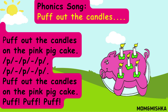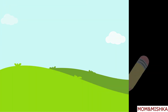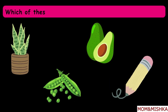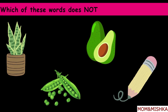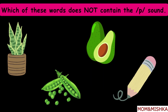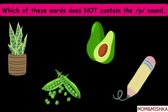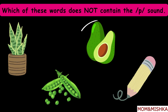So we have learned the sound /p/. Let's check our learning. Which of these words does not contain the sound /p/? Plant, avocado, piece, pencil. The correct answer is avocado!